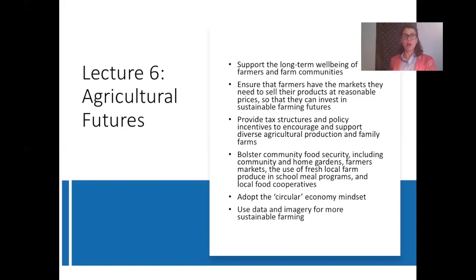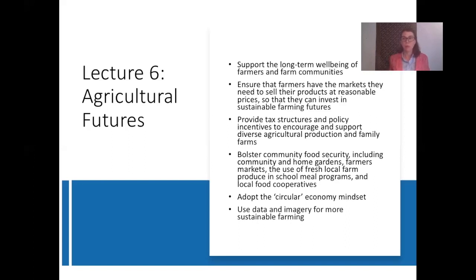The first factor looks at the long-term well-being of farm communities. This means addressing the question of social equity, which is really critical for sustainable agriculture. Wages for farm labor, particularly in industrialized countries, are so low that the agricultural sector really relies on migratory labor from poor countries. Farms are therefore vulnerable to changing migration policies. But perhaps more importantly, farm workers are vulnerable to exploitation, often experiencing low pay, poor standards of living, a lack of opportunities for upward mobility, and unsafe working conditions with little to no government oversight.